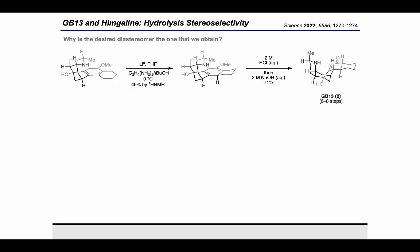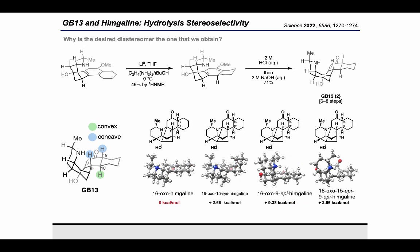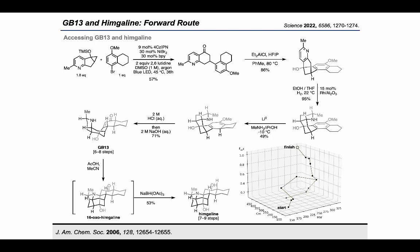One lingering question we had is why the desired diastereomer is the one that we obtain. We believe that the stereoselectivity favors the trans ring fusion, even though that is a higher energy conformation than the cis ring junction of GB-13, because the acidic conditions promote the aza-Michael reaction and cause the hydrolysis to proceed through the intermediacy of 16-oxo-hymgaline, which prefers the trans ring junction. This means two hydrogens are delivered on the concave face while only one is delivered to the convex face in the final reduction-hydrolysis sequence.